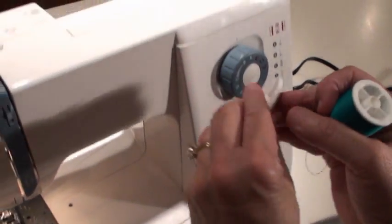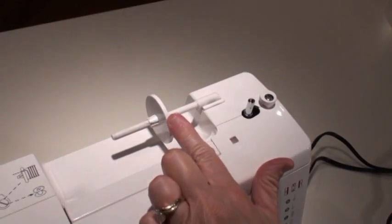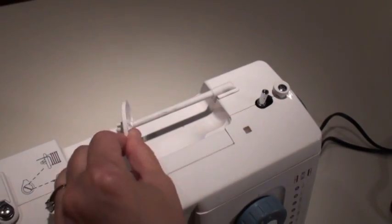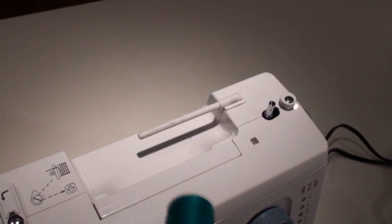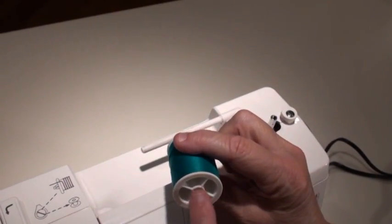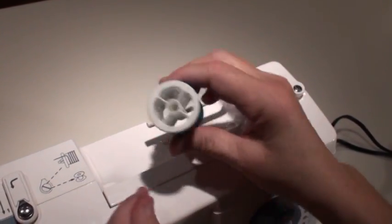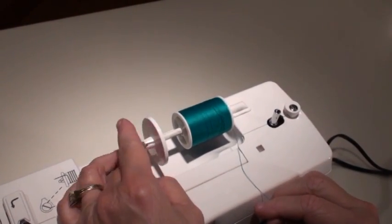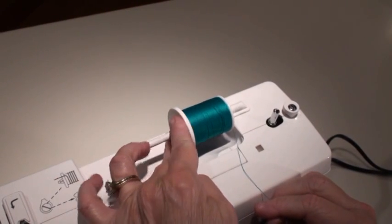The first thing that you do is remove the spool cover, the spool holder. This is the little guy that holds the spool in place. Here's my spool of thread and you want to make sure that the round center goes on the spindle. That allows the thread to evenly unwind from the spool. Put the spool holder back in place.